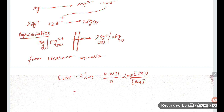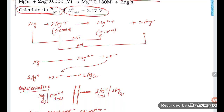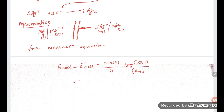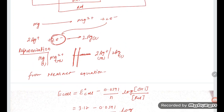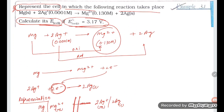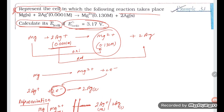E°_cell = 3.17. So it becomes: 3.17 − (0.0591 / 2) × log([Mg²⁺] / [Ag⁺]²). The concentration of Mg²⁺ (oxidation) is 0.130, and the concentration of Ag⁺ (reduction) is 0.001. The coefficient is 2, so it is squared.